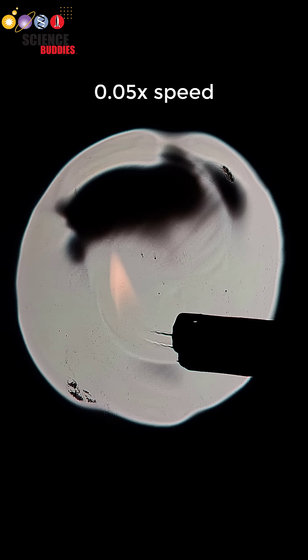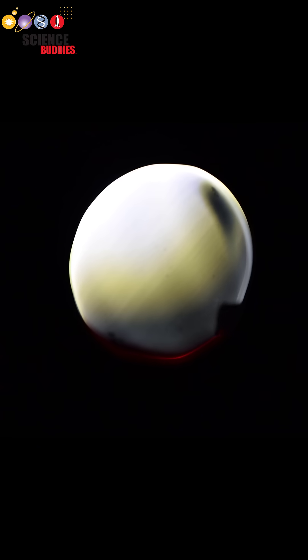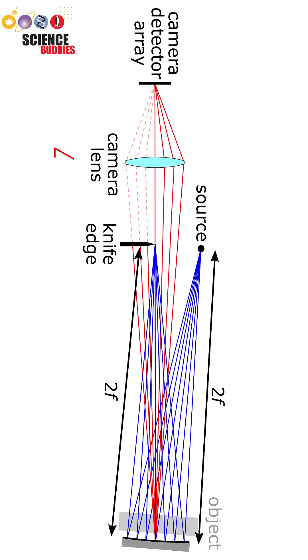These visualization techniques are called shadowgraphy and Schlieren imagery. A point light source is aimed at a concave spherical mirror such that the reflected light is aimed at a camera.